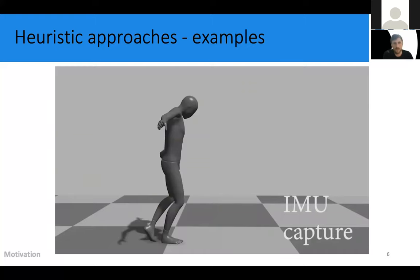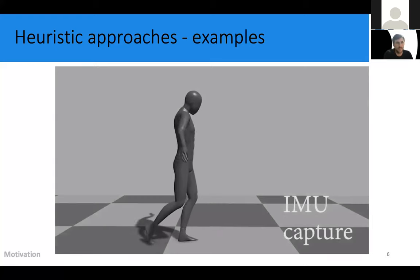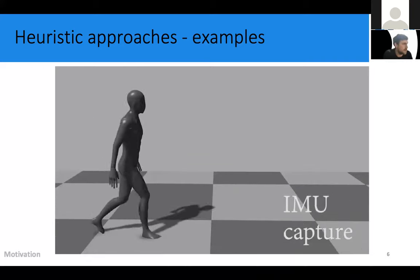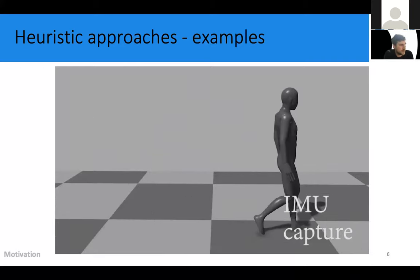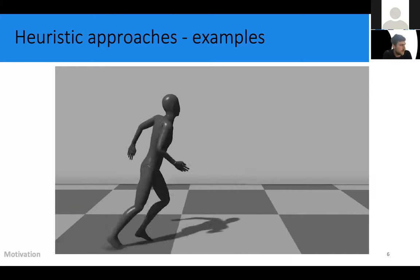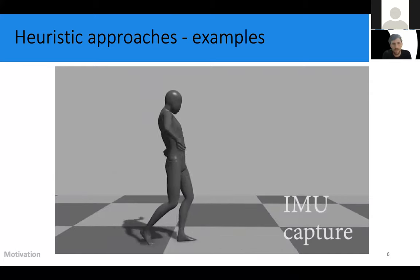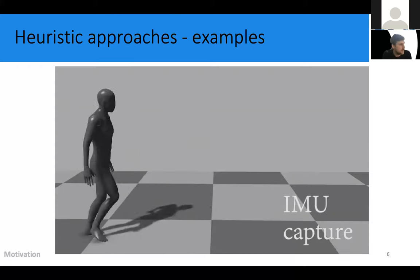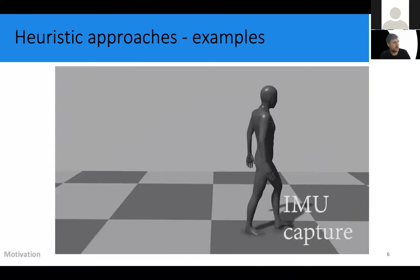So to highlight this, I have a few examples of some heuristic-based methods. So here you can see a character doing some different types of motions. And as you can see, the walking works pretty well. Especially this violent onset to a run that fails miserably.